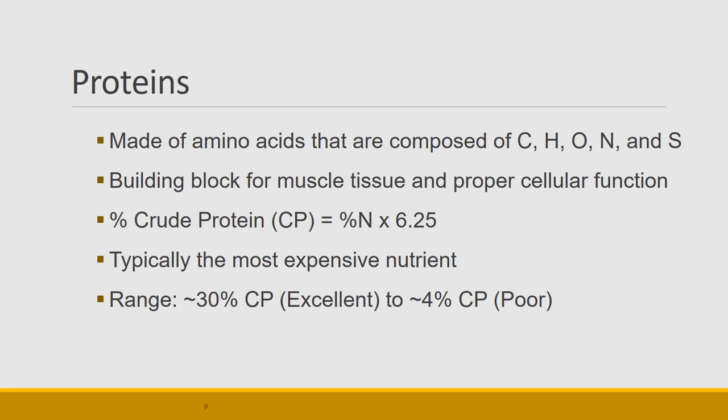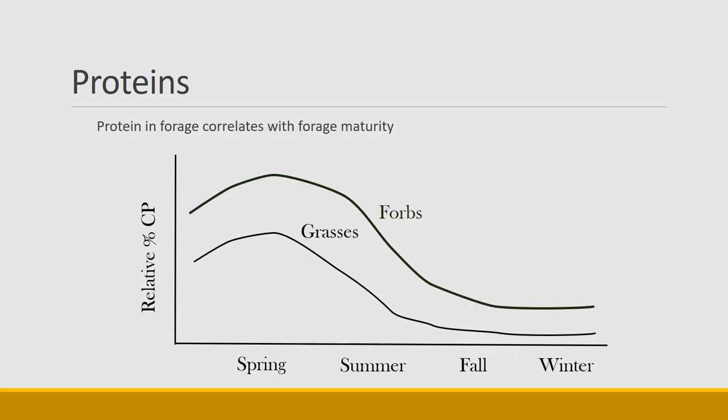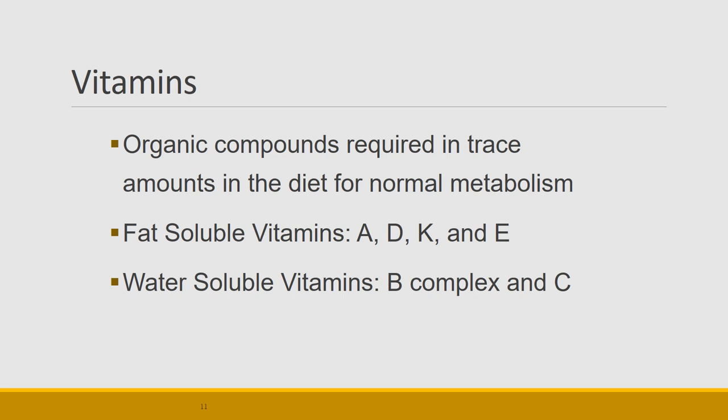Protein is typically the most expensive nutrient and difficult for animals to obtain in the environment because nitrogen is hard to come by. Really excellent range forage would be about 30 percent crude protein, while standing dead grass might be around 4 percent. Forbs generally have a bit more protein than grasses. Protein is usually abundant in spring and summer, but in fall and winter grasses can drop to 4–6 percent crude protein, which is inadequate for animal needs.